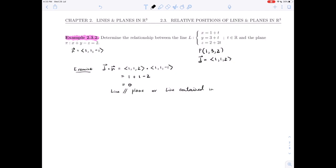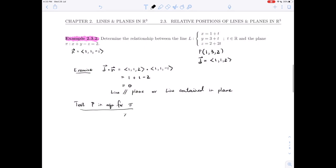And what we have to do is examine next the point P and see if it is contained in the plane or not. So we're going to test P in the equation for pi. So the equation for pi is x plus y minus z equals 2. We're going to look at point P, which is the point 1, 3, 2, and plug that in. So 1 plus 3 minus 2, 4 minus 2 gives us 2.